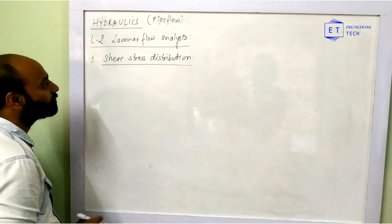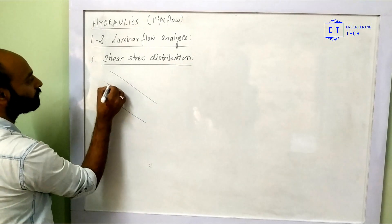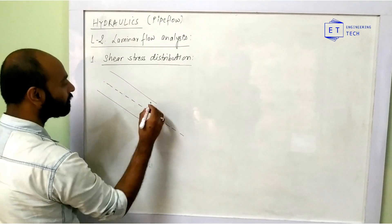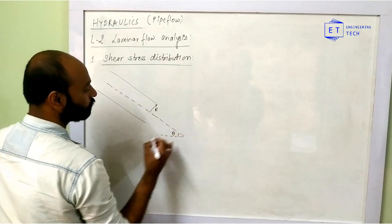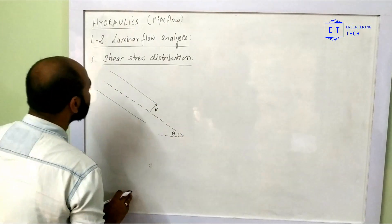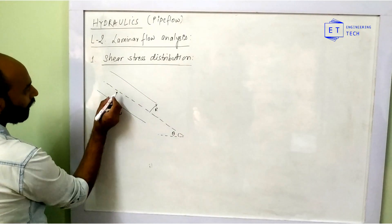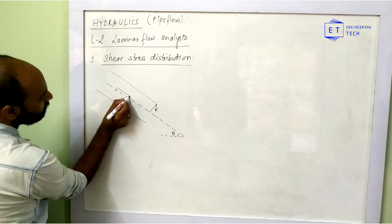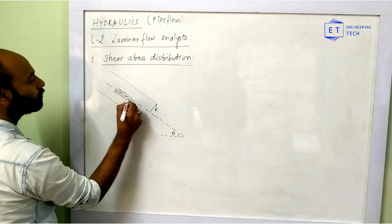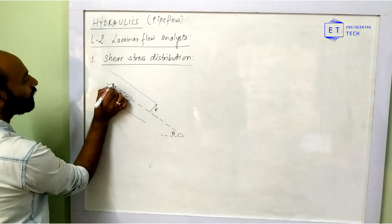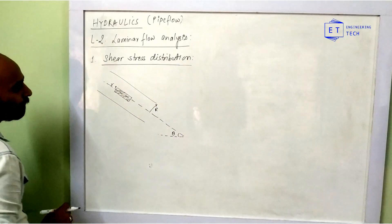For shear stress distribution, I will assume the pipe — let us suppose this is the pipe. This is the capital R and it makes a certain angle theta with the horizontal. Let us consider any fluid element of a certain length, with radius of small r. The overall pipe radius is capital R.